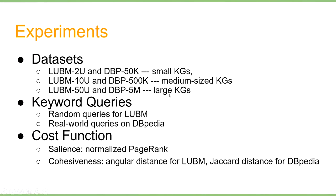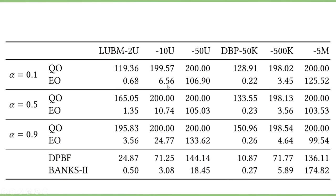Here are the experiments to evaluate algorithms QO and EO. We use a wide range of datasets — small, medium, and large knowledge graphs — with plenty of keyword queries including random and real-world queries, and different cost functions: PageRank, angular distance, and Jaccard distance. As there is no known algorithm for QGSTP, we compute QO and EO and compare them to the state-of-the-art GST-based algorithms DPBF and BANKS2. QO is definitely very slow. Note that QGSTP is harder than GST, so it's acceptable to say EO is comparable to BANKS2. However, on large graphs like DBpedia, EO takes more than 100 seconds for just one query, so there is still room for improvement on large graphs.